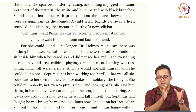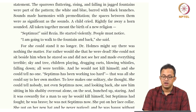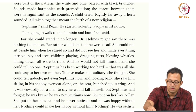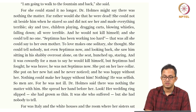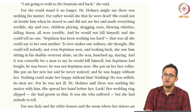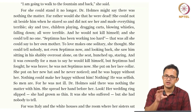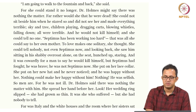He just becomes this immobile, interrupted subject sitting on the bench, hunched up and staring. 'And it was cowardly for a man to say he would kill himself, but Septimus had fought, he was brave, he was not Septimus now.' The whole idea of masculinity is interesting — Septimus had been brave, had killed, had fought a war, but now he is saying cowardly things about killing himself. That cowardice is contrasted with the masculinity he exhibited during the war, representing a complicated transition from a position of privilege to a position of cowardice.